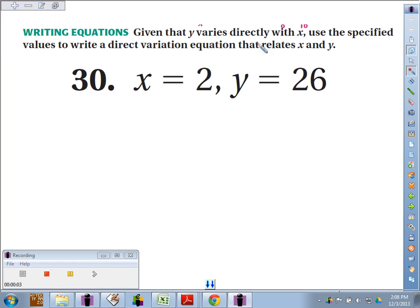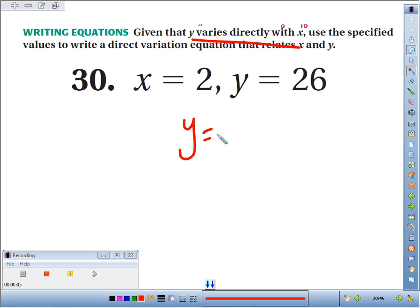Number 30, given that y varies directly with x. If y varies directly with x, we know it's y equals mx. Use the specified values to write a direct variation equation.